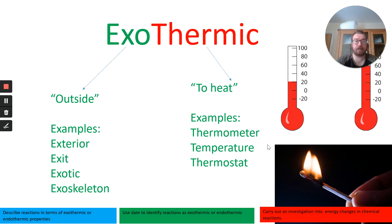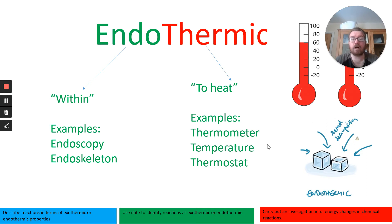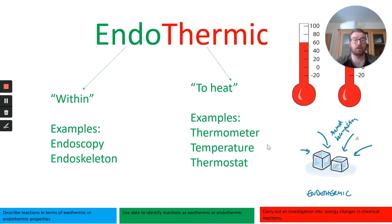A bit more about this word exothermic. If you break it down, it means 'outside heat' — so it releases that energy, shown as a temperature increase. 'Therm' means temperature — for example, thermometer, thermostat. 'Exo' means outside — for example, exterior, exotic meaning outside the ordinary, and insects have an exoskeleton because the skeleton is found on the outside. Endothermic is the opposite. Respiration is exothermic, whereas photosynthesis is endothermic — it takes energy in, it has to absorb energy from the surroundings. Photosynthesis absorbs that energy from the sun, which makes it endothermic. Humans have an endoskeleton because our skeleton is inside.